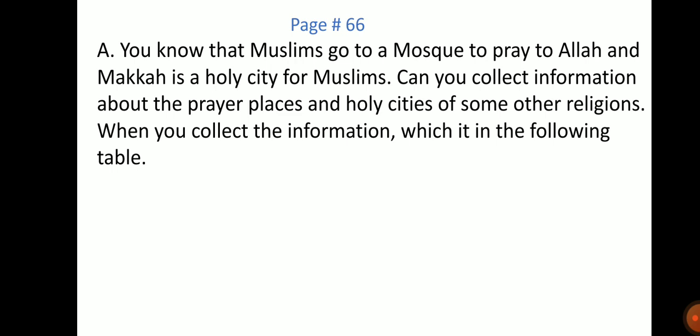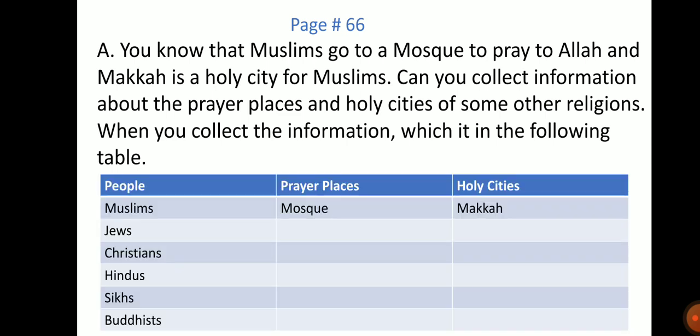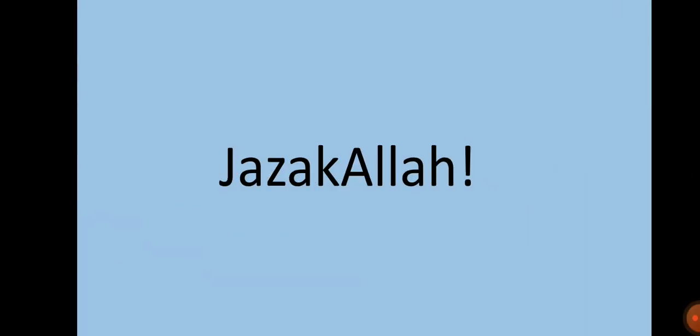Now come to page number 66. This exercise has to be done in your Social Studies book. Exercise A: You know that Muslims go to a mosque to pray to Allah, and Makkah is the holy city for Muslims. Can you collect information about the prayer places and the holy cities of some other religions? Write the information in the following table. You can search it on the internet or in different books. The first column is for the people, the second for the prayer places, and the third for the holy cities. The first one has been done for you. That's all for today. Jazakallah, see you next time, Inshallah.